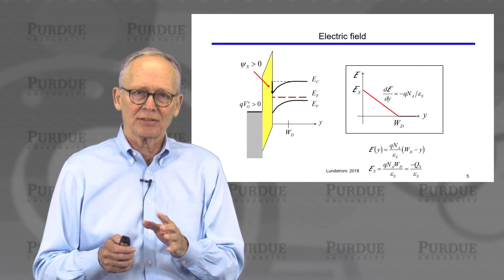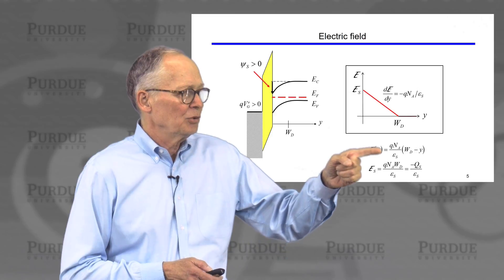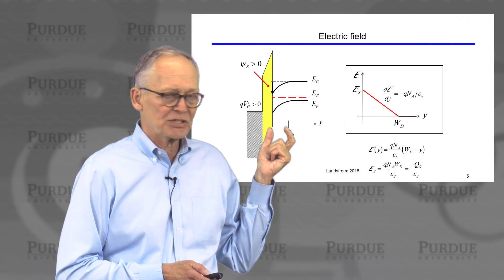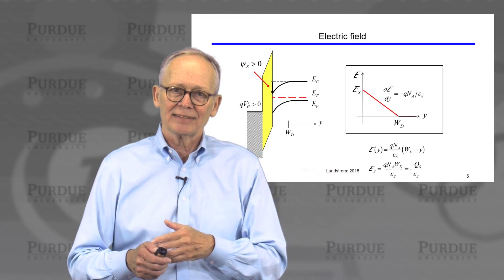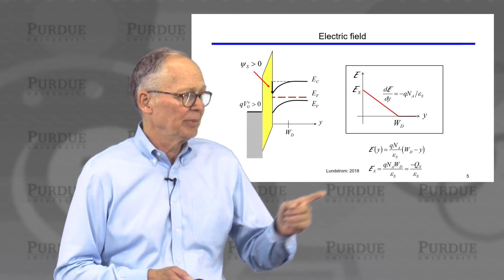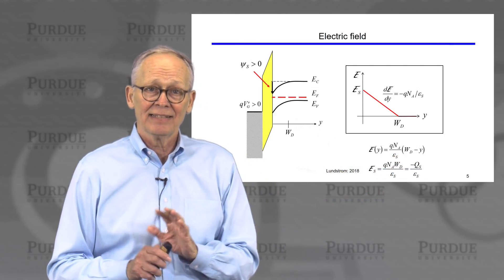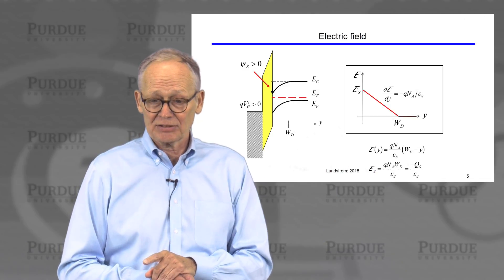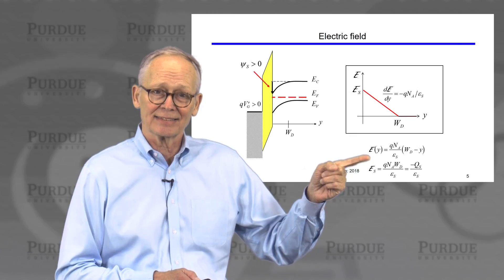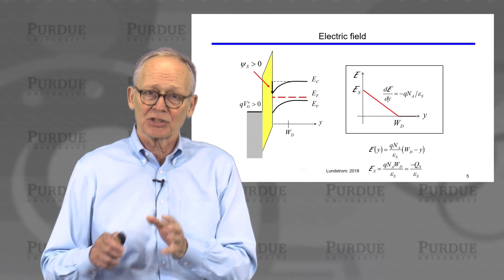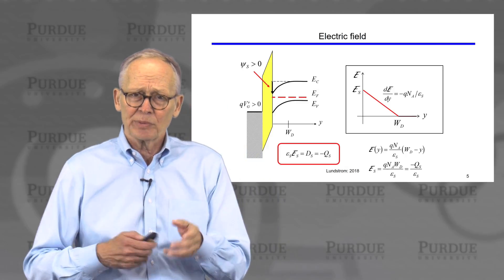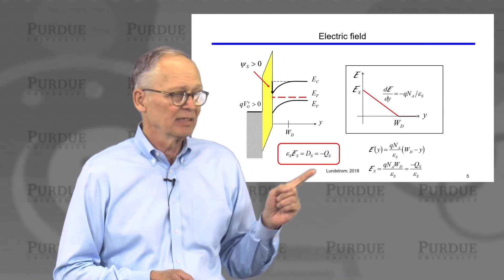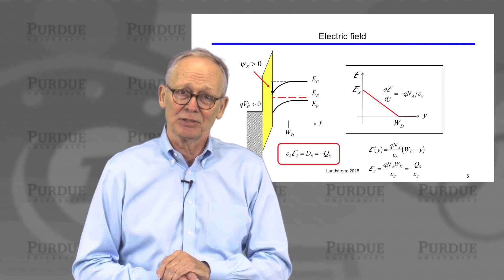Q times N_A is the space charge density per unit volume, and W_D is the depth of the depletion region. Multiplying them gives the charge density per square centimeter, which we call Q_S — the charge in the semiconductor per square centimeter. Since ionized acceptors are negative, the surface electric field equals minus Q_S divided by the dielectric constant. Equivalently, multiplying through by epsilon shows that the displacement field at the semiconductor surface equals minus the total charge in the semiconductor — a useful result to remember.